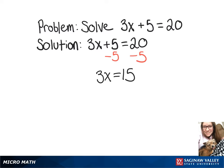Now to get x by itself, we're going to divide both sides by 3, and that will leave us with a solution of x equals 5.